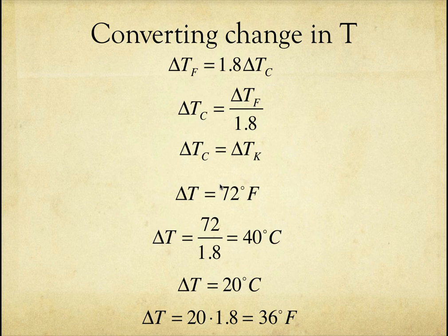Now, if I have the change in temperature in Celsius, it's going to be 20 times 1.8. And that would be 36 degrees in Fahrenheit. What would be the change in temperature in Kelvins for this case? It would be 20. What would 72 degrees Fahrenheit change correspond to the change in Kelvins? The same as Celsius. So the change in temperature in Celsius equals the change in temperature in Kelvin.